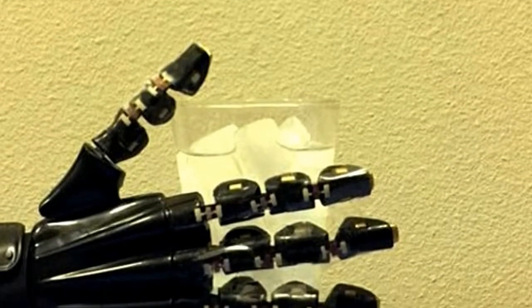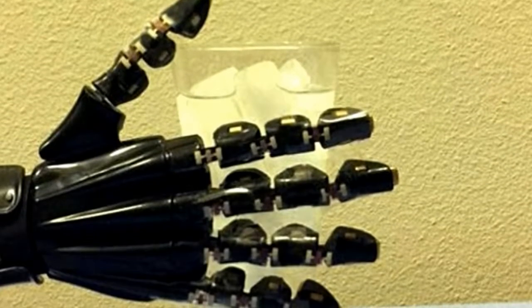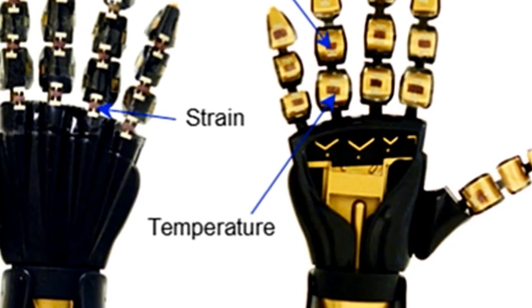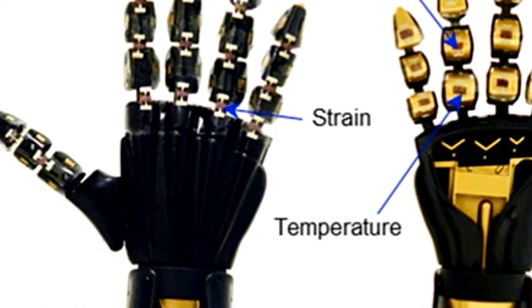A team of researchers from the University of Houston has reported a development in stretchable electronics that can serve as an artificial skin, allowing a robotic hand to sense the difference between hot and cold, and also offering advantages for a wide range of biomedical devices.